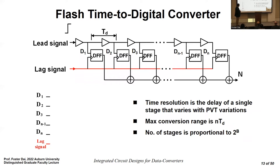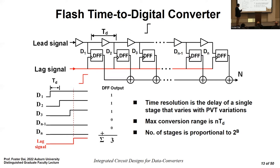A flash time-to-digital converter uses a delay chain. When a lead signal passes through the delay chain and the next signal arrives, the next signal triggers the flip-flop clocks to read out the data. In this example, when the read signal arrives, the lead signal has already passed three stages, so the time interval between the two pulses is determined as three times the delay. The resolution is the delay of each stage.